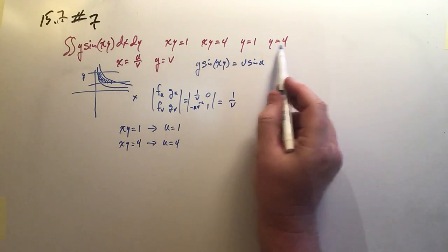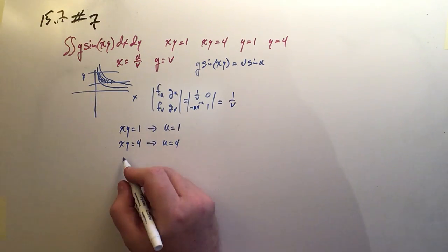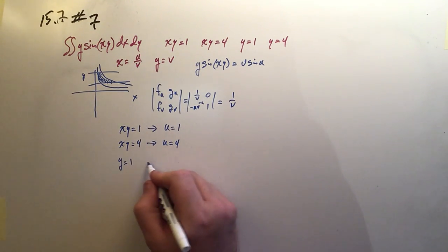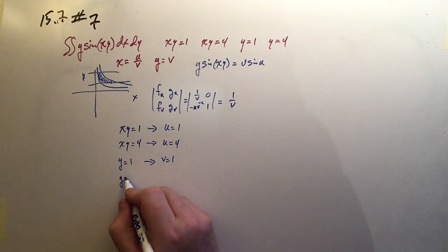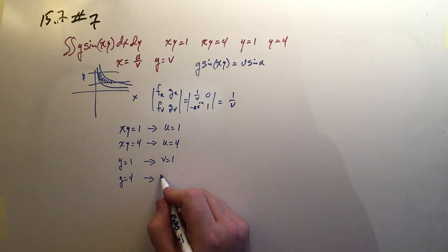And look at the other ones. y is 1 and 4. Well, y equals v. So when y equals 1, that means v equals 1. And when y equaled 4, well that means v equals 4.